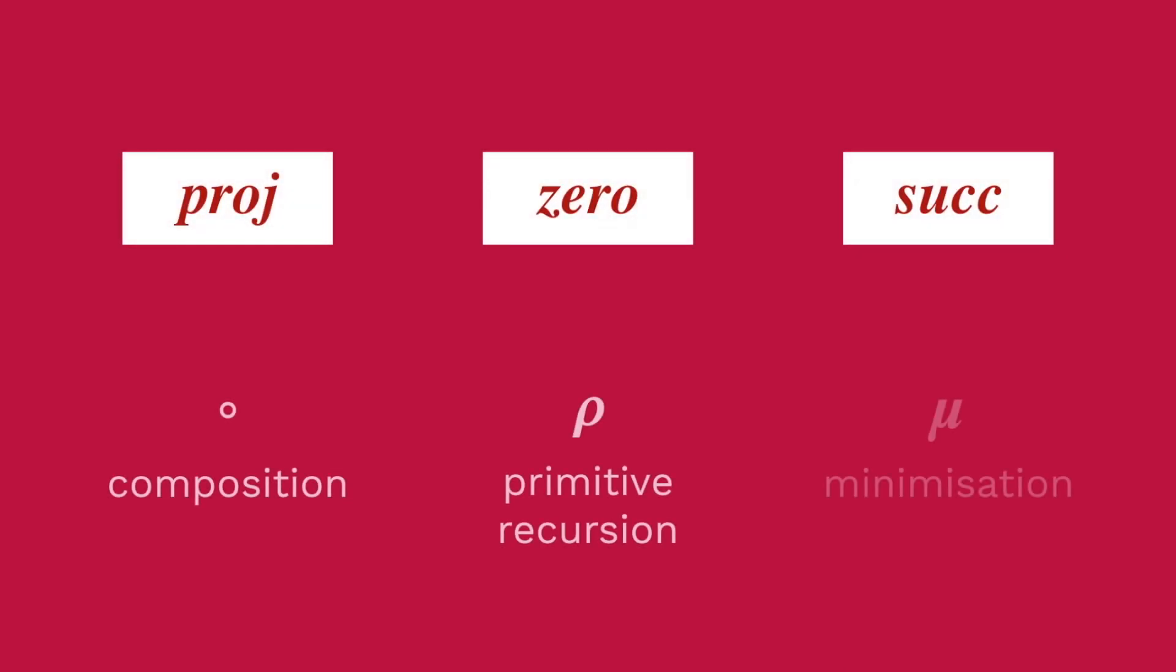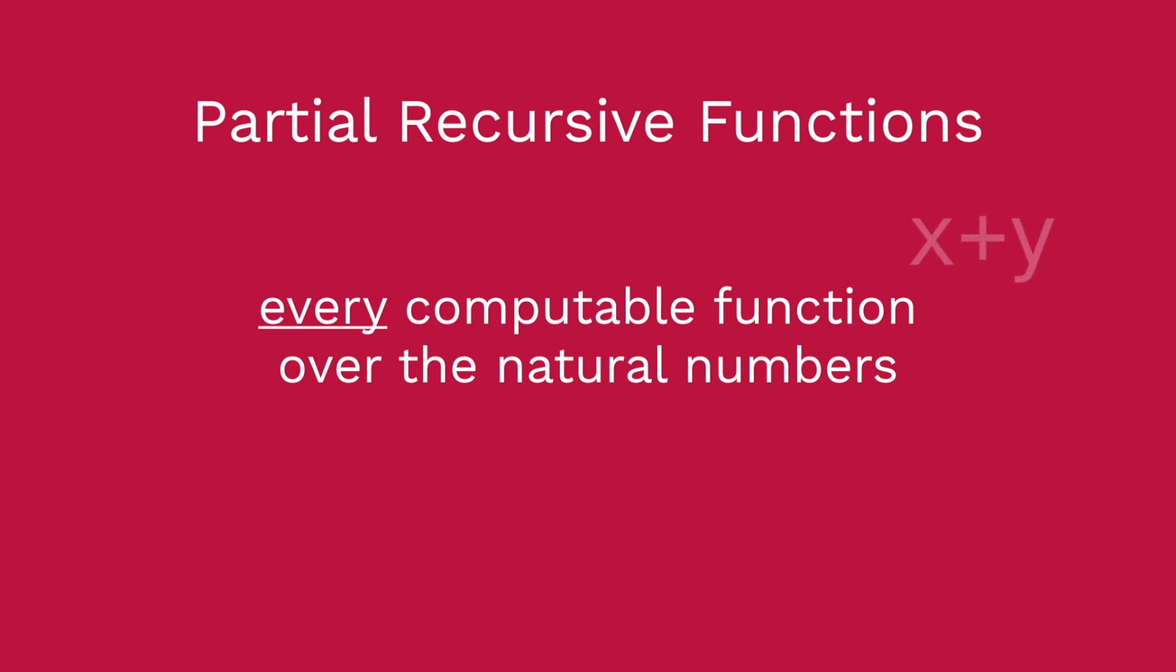We're going to introduce these three basic functions and a few building blocks for composing functions together – composition, primitive recursion, and minimisation. The result is going to be that we'll be able to build the set of partial recursive functions. Now what's really cool about this set of functions is that it happens to be the set of every computable function over the natural numbers.